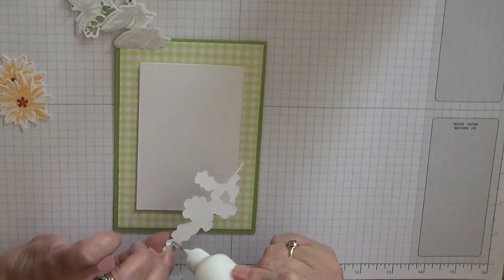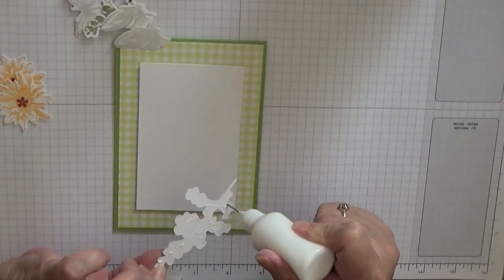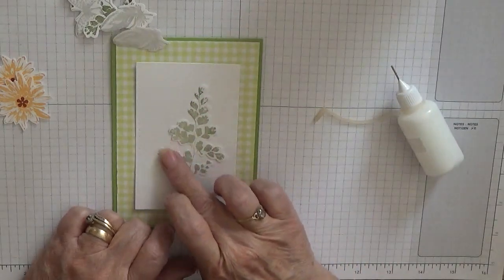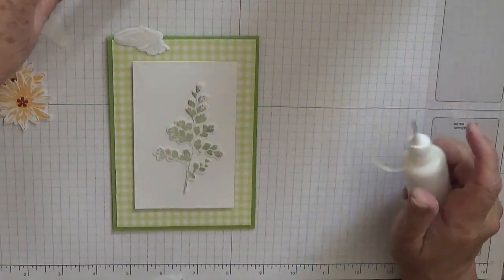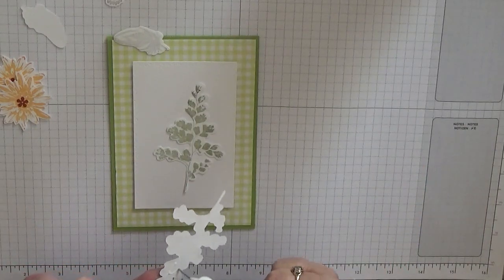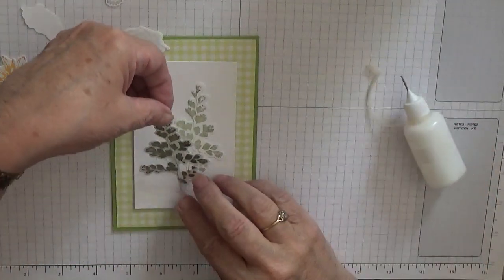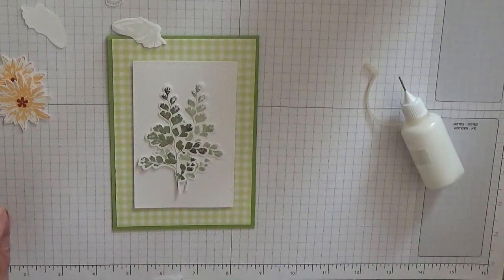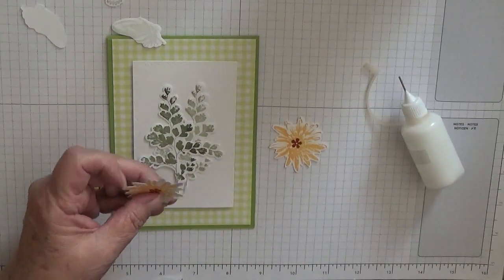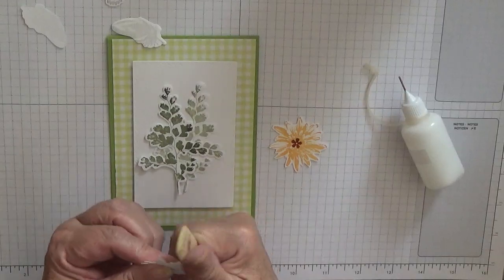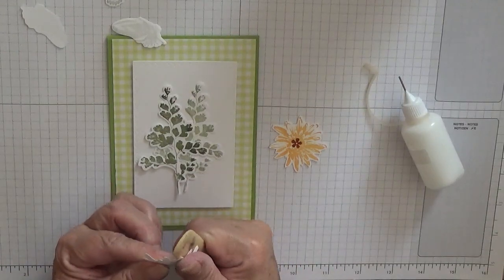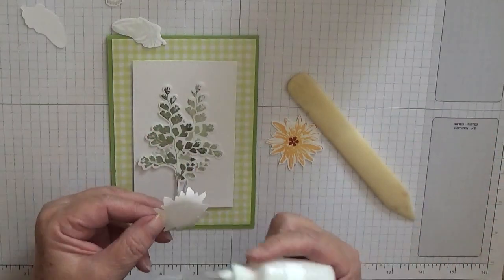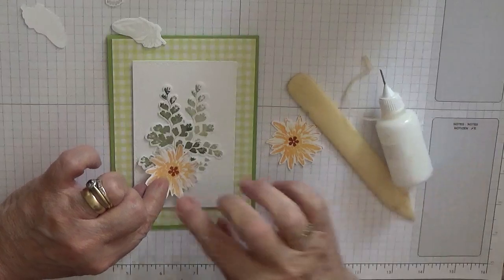And then we'll just rearrange all these on. So I put the light one on first. These are all getting glued down flat. And then that one over the top. I just curl the edges up a little bit.